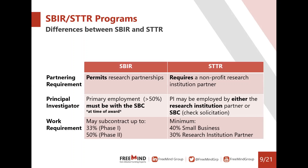In terms of work requirements: for the SBIR phase one, the small business must perform at least two-thirds of the work and may subcontract up to 33%. For phase two, it's 50-50 — you can subcontract up to 50%. For the STTR program, the minimum work effort for the small business is 40%, followed by a minimum of 30% from the research institution partner, with the remaining allocation flexible.